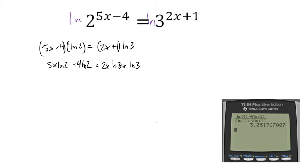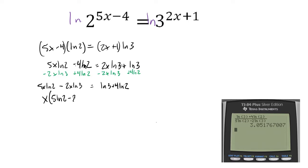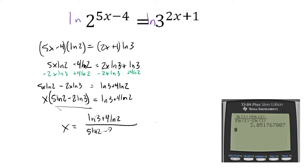To solve for x, we can't just divide both sides by 5x minus 4 or 2x plus 1 because x would end up in numerator and denominator. So we distribute ln 2 and ln 3: we get 5x ln 2 minus 4 ln 2 equals 2x ln 3 plus ln 3. We subtract 2x ln 3 from both sides and add 4 ln 2 to both sides, giving us 5x ln 2 minus 2x ln 3 equals ln 3 plus 4 ln 2. Factor out x: x times (5 ln 2 minus 2 ln 3) equals ln 3 plus 4 ln 2. Divide both sides to get x equals (ln 3 plus 4 ln 2) divided by (5 ln 2 minus 2 ln 3), which is approximately 3.05.